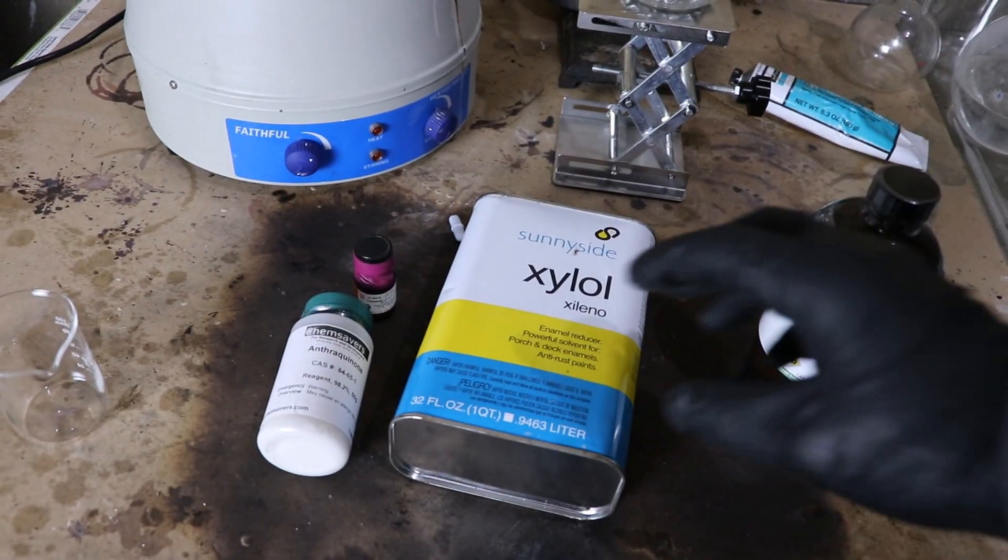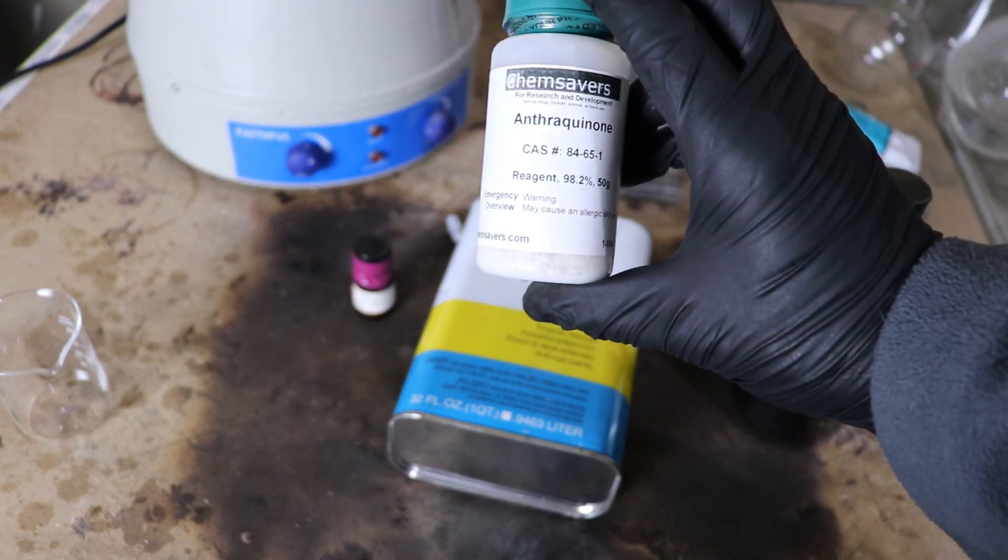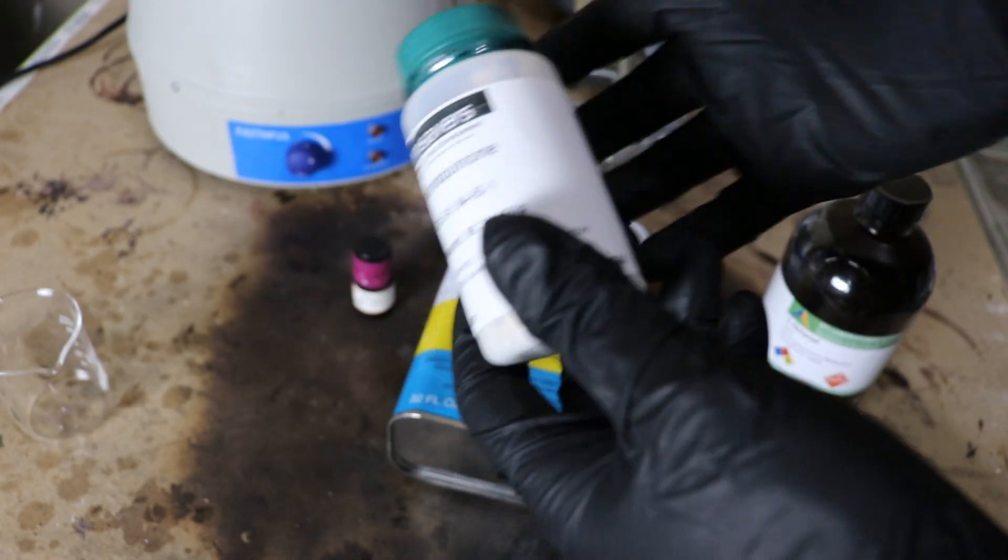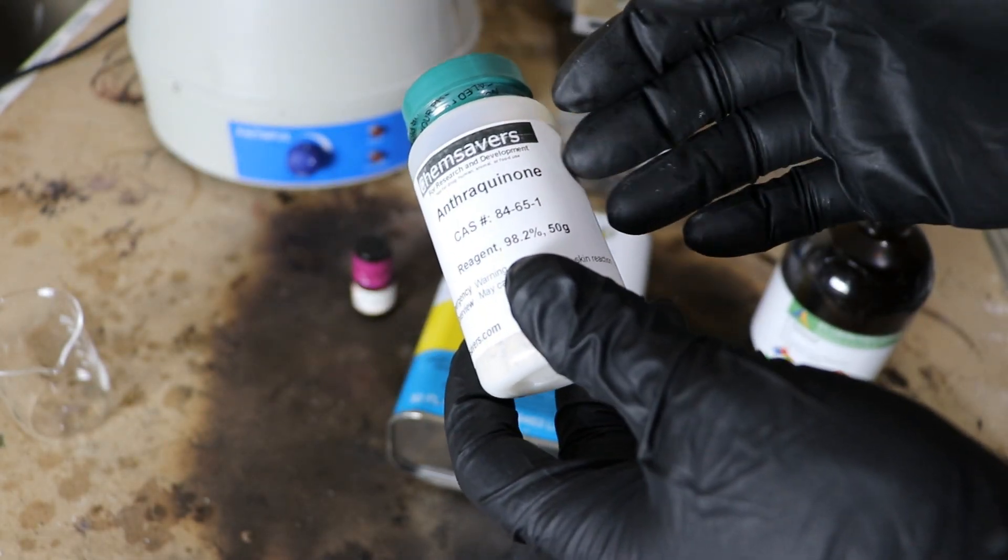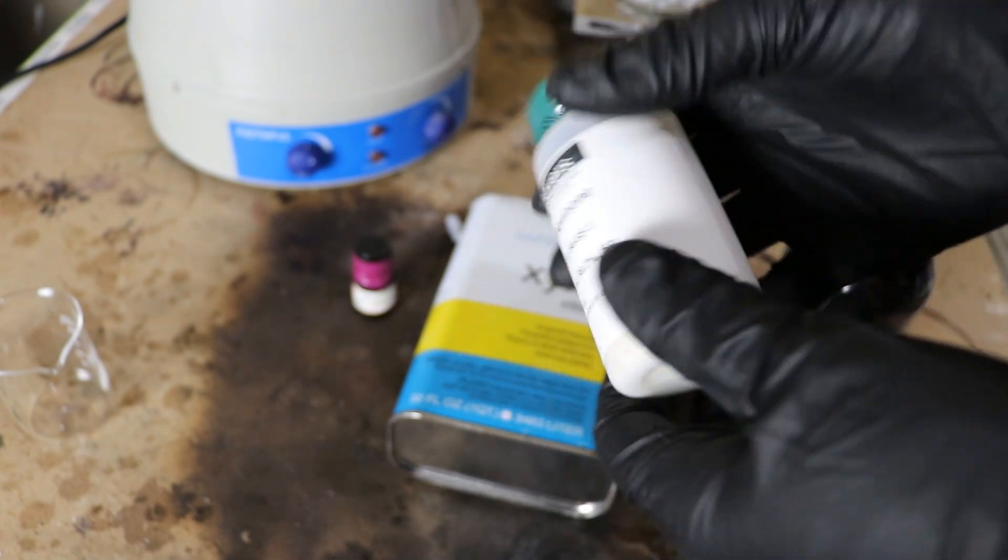So to celebrate I thought I'd try my hand at the anthraquinone process for the production of hydrogen peroxide. So this is all catalytic. The anthraquinone is first hydrogenated and then oxidized. Then I can react that with water to produce hydrogen peroxide and anthraquinone.